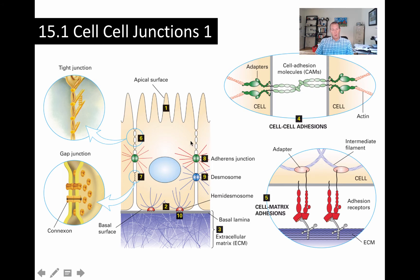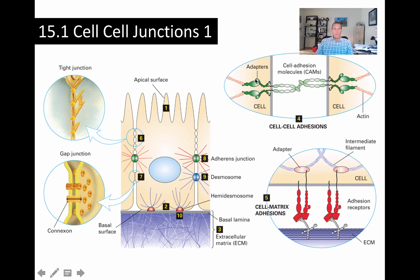Adhesive junctions and desmosomes anchor the cytoskeleton to the cell surface and two cell surfaces together. To do this, they rely on specialized adhesion proteins. If we look at this diagram showing cell-to-cell adhesion using molecules called CAMs or ICAMs, we have adapter proteins attached to these proteins, which are partly extracellular and partly cytosolic with a transmembrane domain. These two proteins interact with one another and also with their respective cells' cytoskeletons — linking through adapter proteins to the cytoskeleton of the cell on the left and to the cytoskeleton of the cell on the right.